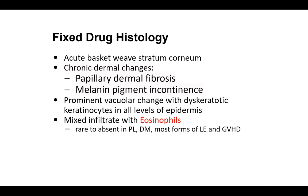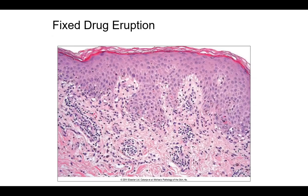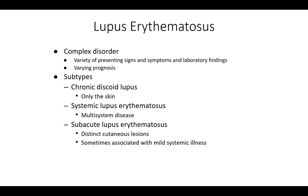Eosinophils are rare to absent in pityriasis lichenoides and other lichenoid interface reactions. GVHD, lupus erythematosus, and dermatomyositis typically do not have many eosinophils. Moving on to autoimmune connective tissue disease, we'll start with lupus.